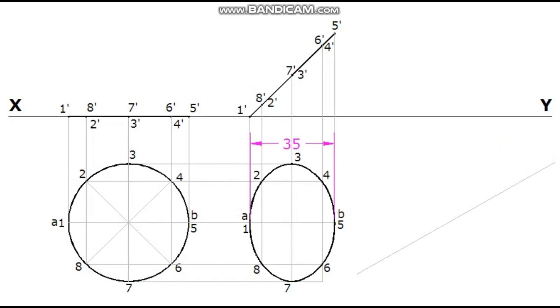Measure the length of diameter AB from the second stage plan. Mark it on the 30 degree line. Now reconstruct the third stage plan based on this 30 degree inclined diametrical line.